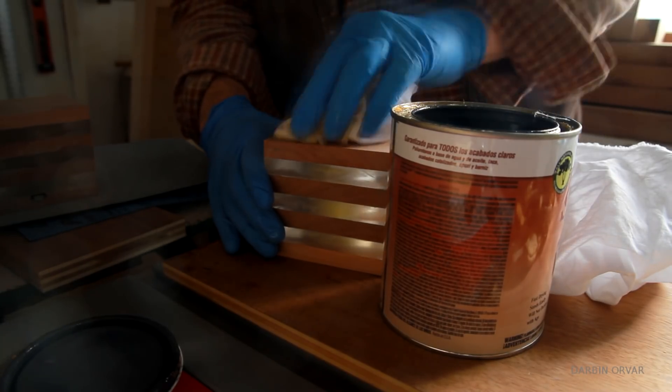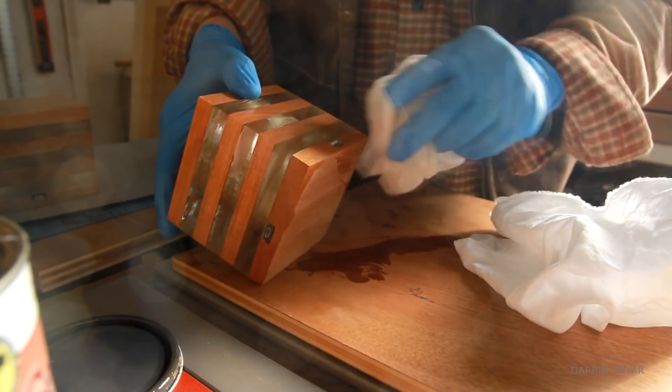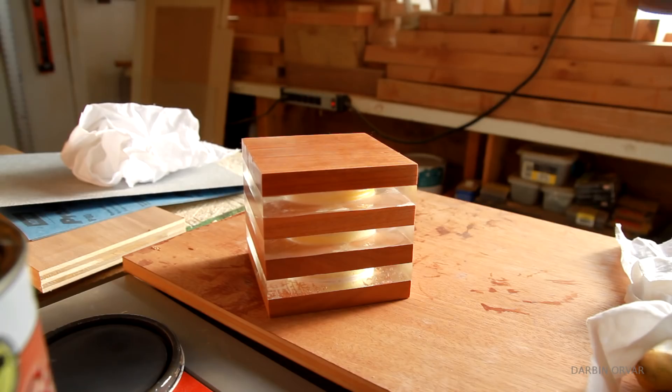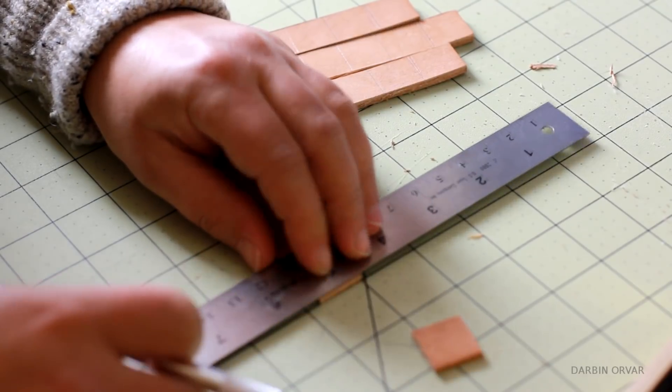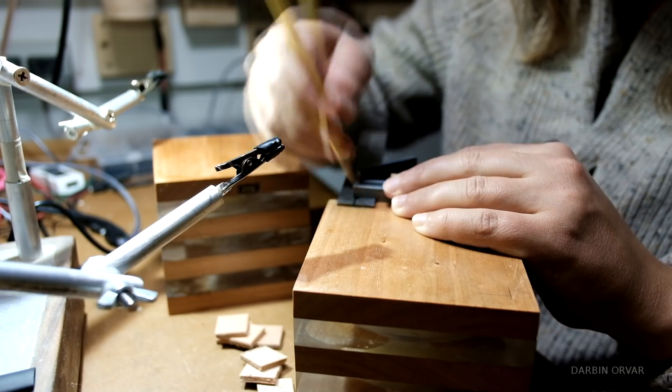Next up, sanding, and then finishing with a coat of shellac. To give the cubes little feet so they don't scratch any surface, I'm cutting up some leather here, and then just attaching with hot glue.